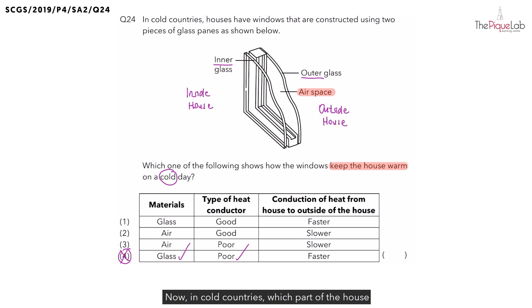In cold countries, which part of the house will be colder? Would it be the inside or the outside of the house? Yes, it will be the outside of the house that's cooler, which means the inside of the house would be warmer. After some time, the house is going to become colder.